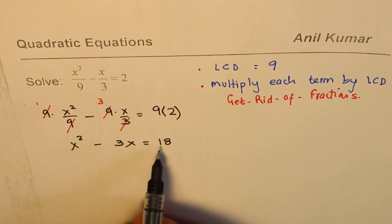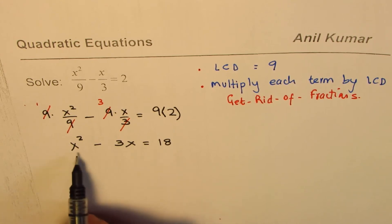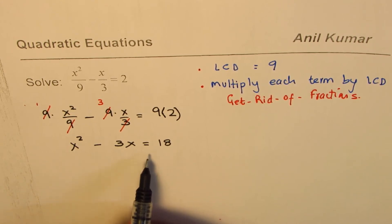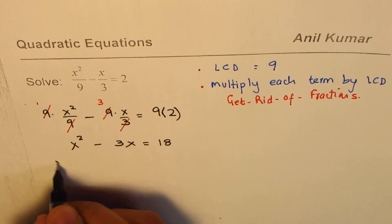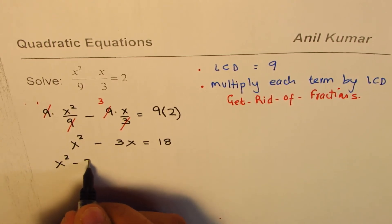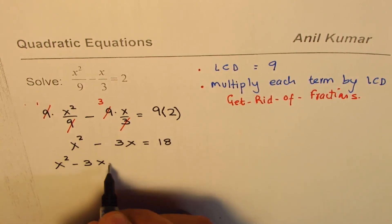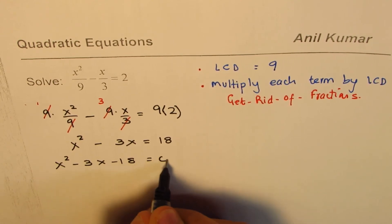So we have a quadratic equation where the fractions are gone. That makes it simpler. So now we can rearrange. So we can write this as x² - 3x - 18 = 0.